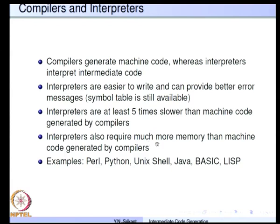Interpreters also require much more memory than machine code generated by compilers, because interpreters have the symbol table and other data structures and need to simulate the entire machine environment. Perl, Python, Unix shell, Java, Basic, and Lisp are examples of interpreted languages, whereas C, C++, and Pascal are examples where compilers produce machine code.